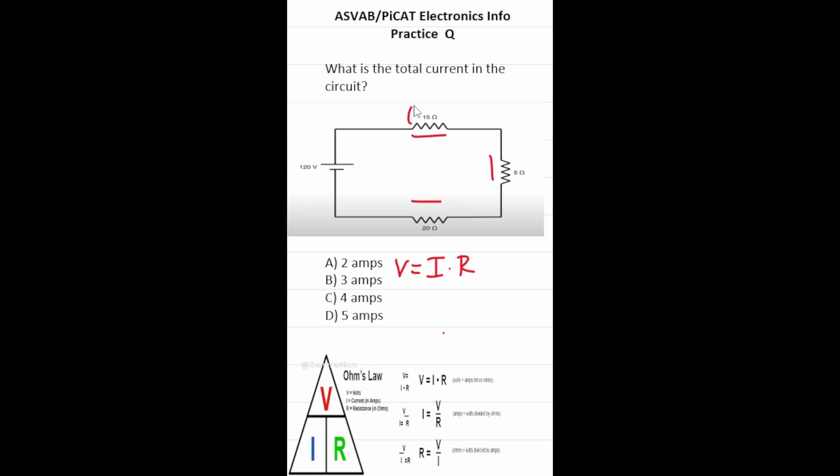This is 15 ohms of resistance, this is 5 ohms of resistance, and this is 20 ohms of resistance. 20 and 20 is 40. So our total resistance is 40. We can see that we have a 120 volt circuit. So all we have to do is solve for I. This becomes 120 equals I times 40. If we divide both sides by 40, we get I, current, by itself. These zeros cross out. 12 divided by 4 is 3. So there is B, 3 amps of current.